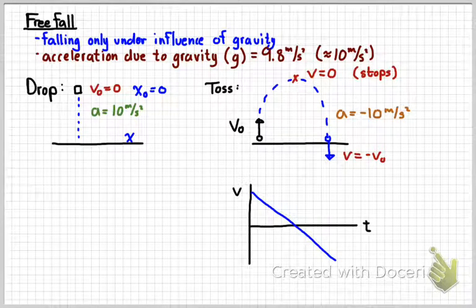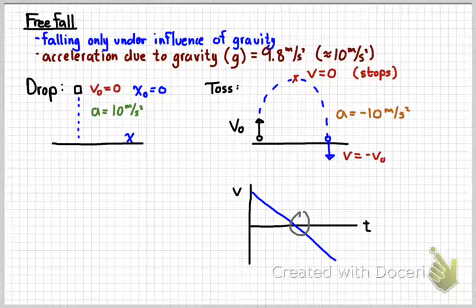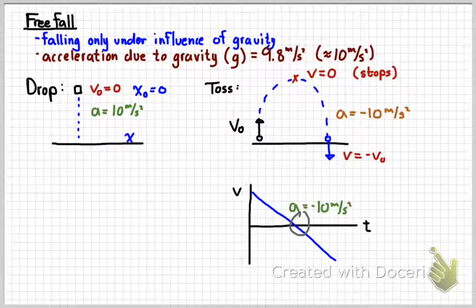It may be easier to sketch a velocity-time graph for a tossed object: velocity starts at some large positive value, crosses zero at the top, then becomes negative on the way down. The slope of that line is negative, confirming that the acceleration must be negative 10 meters per second squared.